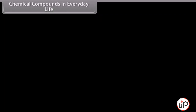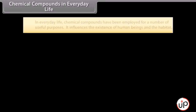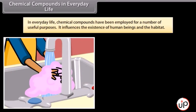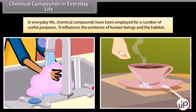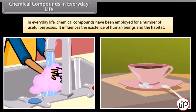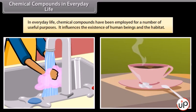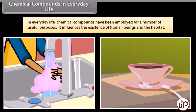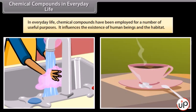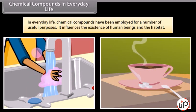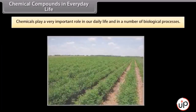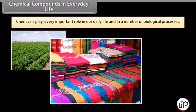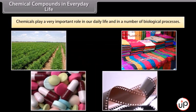Chemical compounds in everyday life. In everyday life, chemical compounds have been employed for a number of useful purposes — for example, sugar is used to sweeten tea, soaps are used for washing and bathing purposes. It influences the existence of human beings and their habitat. A number of compounds find application in agriculture, textiles, medicines, photography, etc. Thus, chemicals play a very important role in our daily life and in a number of biological processes.